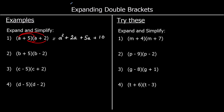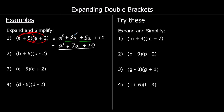We now look at collecting the like terms. We've got an a squared term, two a terms that we can add together, and a ten. We can't add a squares to a's because they're a different thing — we can only add things that are the same. So we've got a squared, we've got 2a plus 5a which makes 7a, so we've got a squared plus 7a plus ten. That is expanded and then simplified — that is our answer.